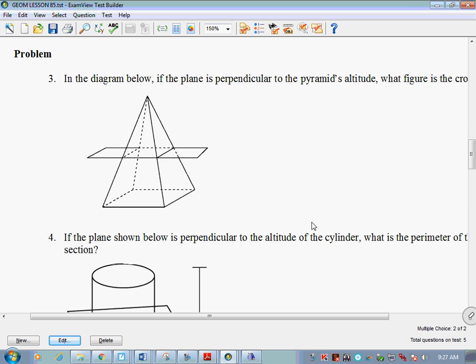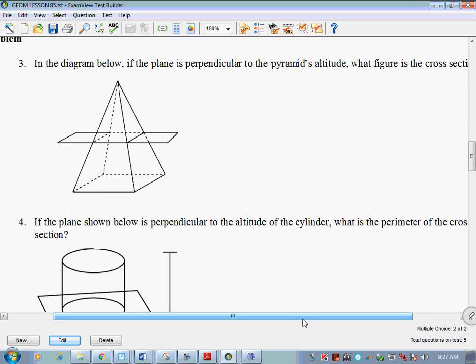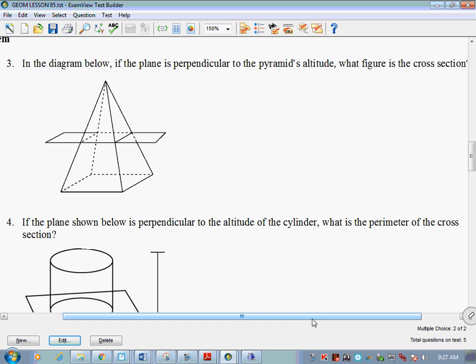Let's look at number three. In the diagram below, if the plane is perpendicular to the pyramid's altitude, what figure is the cross section? Well, if it's perpendicular to the altitude, it means it's parallel to what? The base. It kind of harkens back to question number one, which means what's the cross section that we're left after that plane cuts it? It's a square. Well, at least it should be. Now do we know the shape of the base of this pyramid? Do we know it's a square?